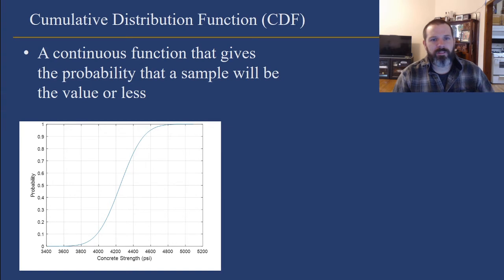A cumulative distribution function is a continuous function that gives the probability that a sample will be a value or less. So if I look here at the cumulative distribution function at 4,200, what this is saying is that there is a 40% chance that it is 4,200 or less. So it is cumulative.